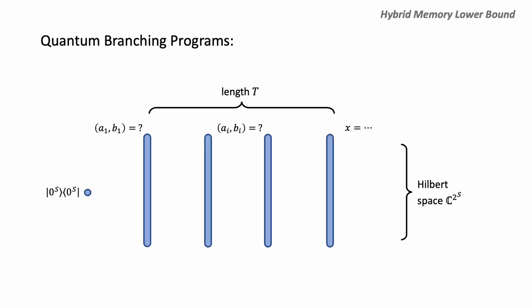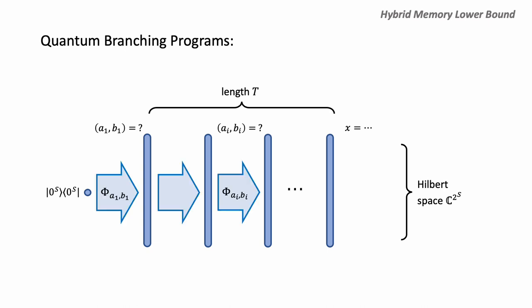More formally, we consider a quantum branching program. It starts with an all-zero quantum state — a hybrid memory consisting of m-bit classical memory and q-qubit quantum memory. Every time a sample (a_i, b_i) is received, it applies a channel controlled by the sample, with the condition that the resulting system is also a hybrid memory. Finally, a measurement is applied and it outputs a guess. This is the model — the quantum branching program — that describes the learning algorithm we are considering.